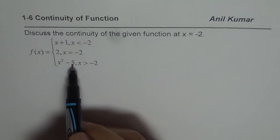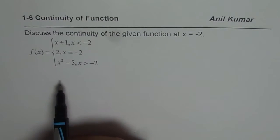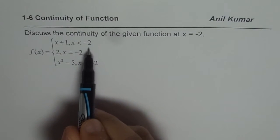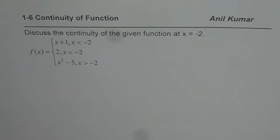Individually each piece is continuous but the point where they are getting joined is minus 2. We need to figure out whether at minus 2 they overlap or not. If they overlap then the function is continuous, if they don't then they are not continuous.